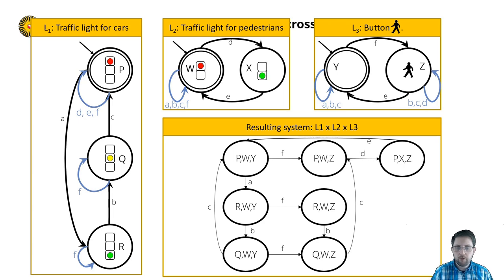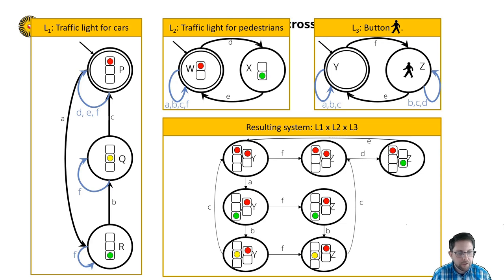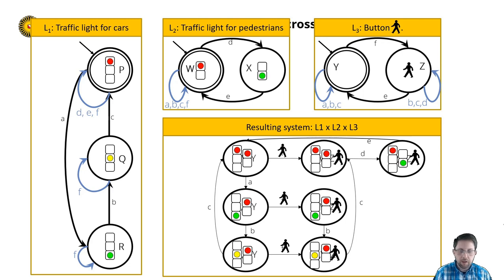Let's study the model in more detail. State P is the red light for cars, R is green for cars, and Q is yellow for cars. State W reflects red for pedestrians, and state X reflects green for them. State Z represents that the button is pushed, and action F represents the pushing of the button. Now compare this annotated model with the models from the first lecture using the reflective modeling cycle — how do they differ, and which do you prefer? Notice that we now have three different models for the same situation.